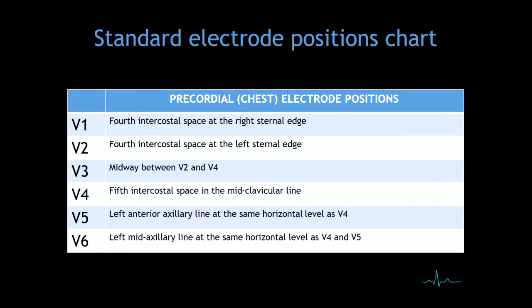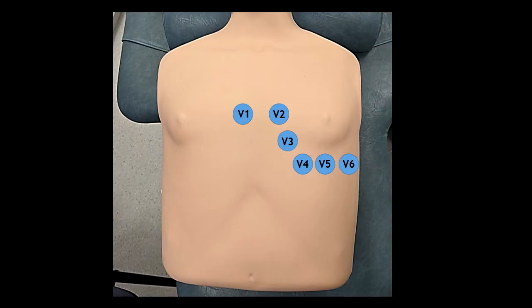In this chart we can visualize the precordial electrode positions. These are a total of six electrodes and they are placed on the patient's chest. Here you have an example on how to place the precordial electrodes on a patient's chest.